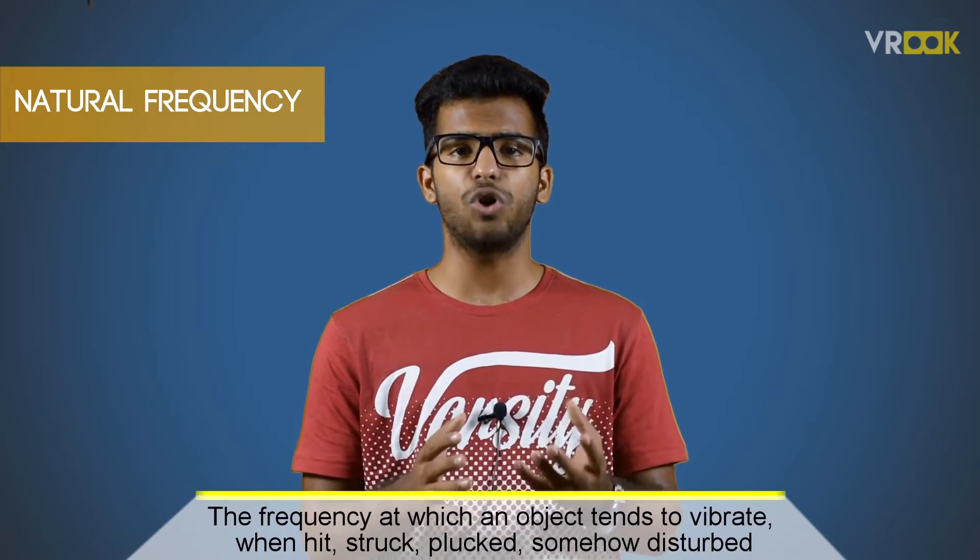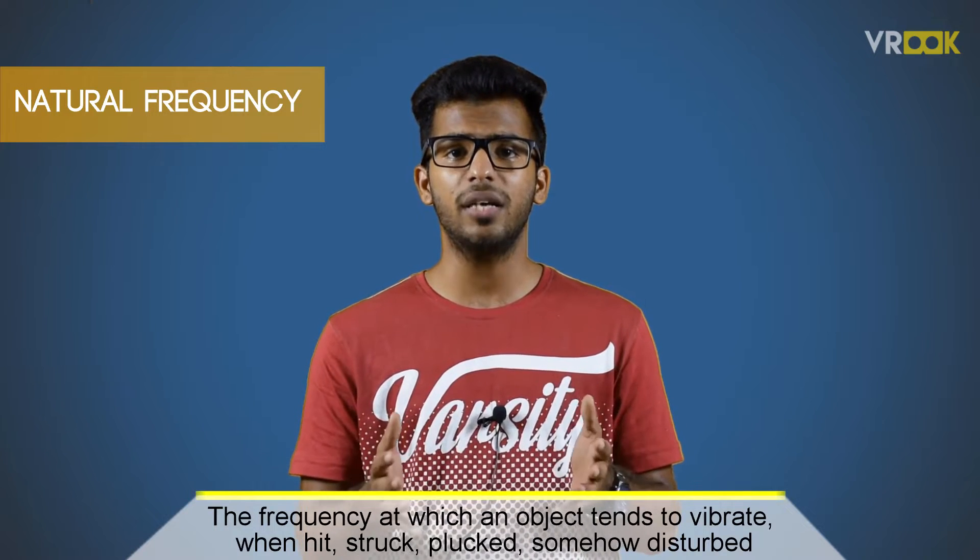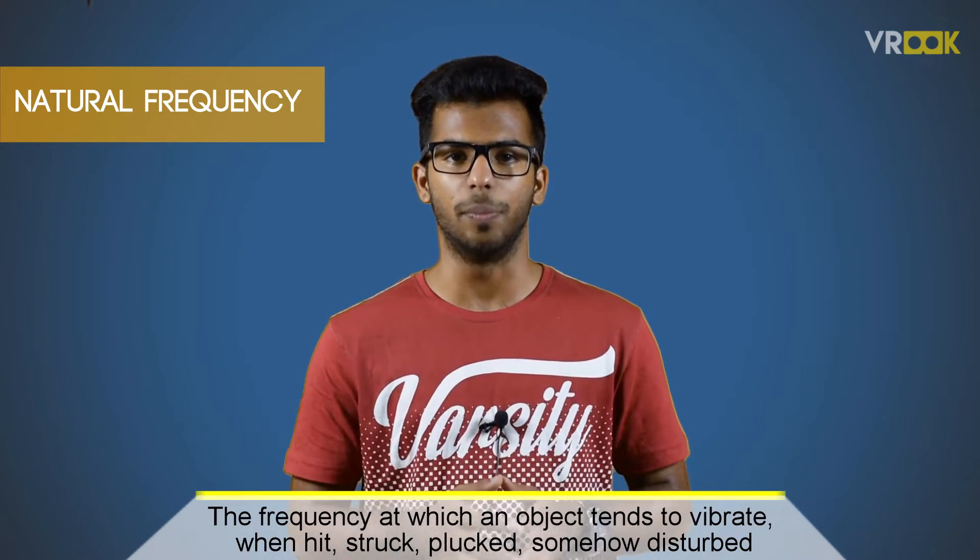Nearly all objects when hit, struck, strummed, or somehow disturbed will vibrate. If you drop a pencil on the floor, it will vibrate. If you pluck a guitar string, it will begin to vibrate. All of these objects tend to vibrate at a particular frequency or set of frequencies. The frequency at which an object tends to vibrate when hit, struck, plucked, or somehow disturbed is known as the natural frequency of the object.